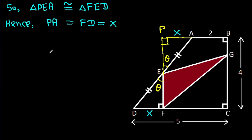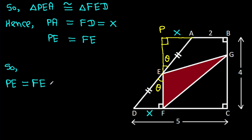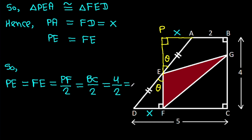Also PE will be equal to FE. Since FE equals BC and BC is 4, divided by 2, that means FE is 2.